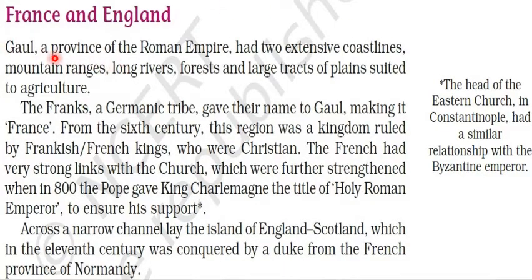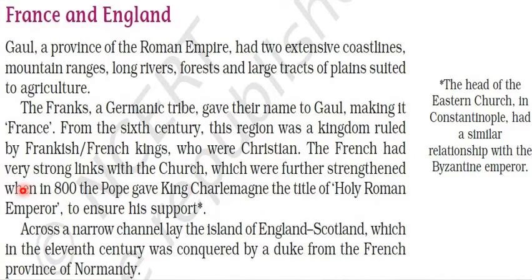France and England. Gaul, a province of the Roman Empire, had two extensive coastlines, mountain ranges, long rivers, forests, and large tracts of plains suited to agriculture. The Franks, a Germanic tribe, gave their name to Gaul, making it France. From the 6th century, this region was a kingdom ruled by Frankish or French kings who were Christians. The French had a very strong link with the church, which was further strengthened when in 800 the Pope gave King Charlemagne the title of Holy Roman Emperor to ensure his support.